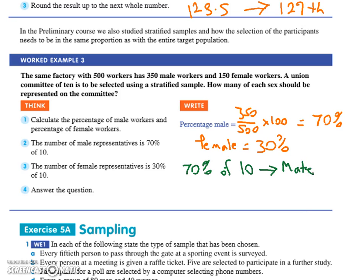That says mate. Now it says male. So you should be able to work out 70% of 10 without a calculator. But if you can't, use a calculator. 70% times 10. And you should have 30% of the 10 should be female. So you should end up with 7 blokes and 3 female.